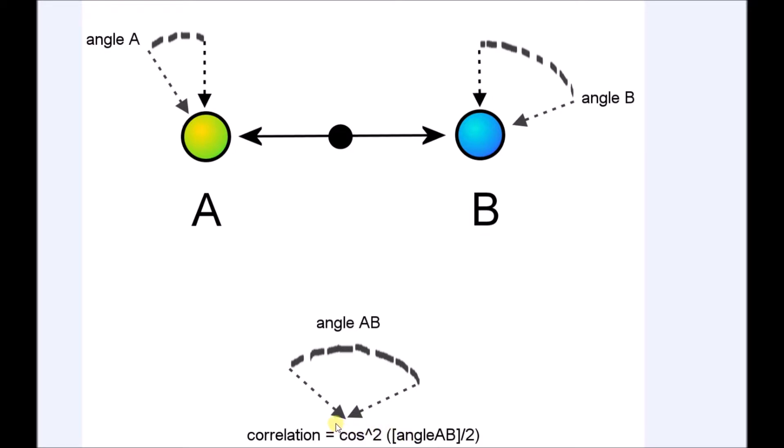When the angle is zero, the correlation is then always minus one, meaning A and B always result in opposite values. Because of this, we only need one plan. The plan for detector A is always exactly opposite to the plan for detector B.